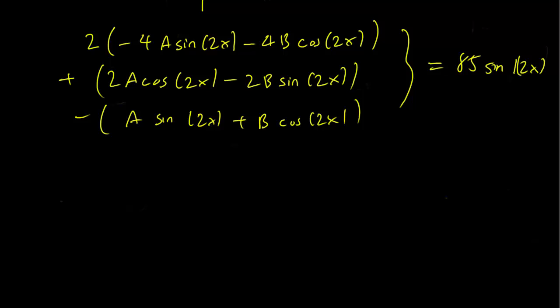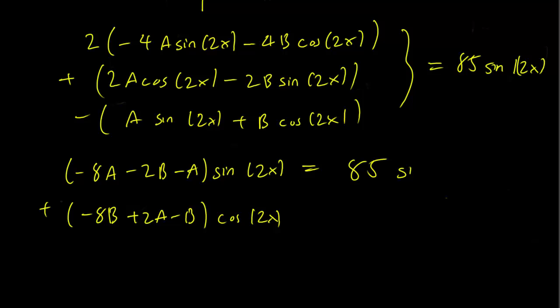Let's gather the sine and cosine terms. So we have minus 8A minus 2B minus A times sine 2x. And this is going to be plus minus 8B plus 2A minus B cosine 2x is going to be equal to 85 sine 2x.